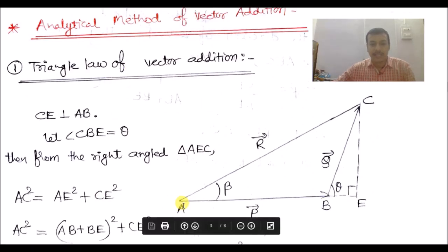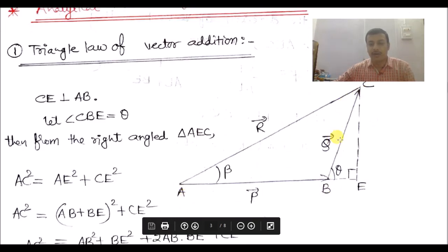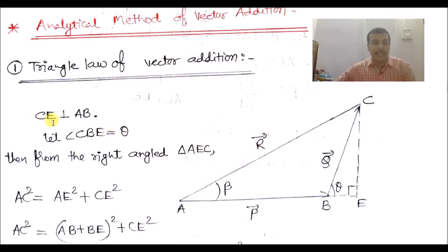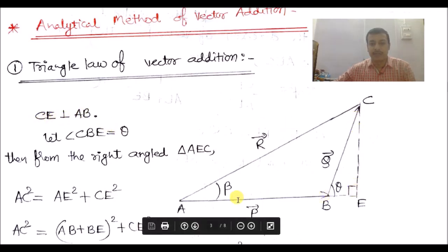We start the analytical method of vector addition with the triangle law. Suppose there is a triangle with sides AB, BC, and AC. Side AB is represented by vector P and side BC is represented by vector Q. According to the triangle law, the resultant R is represented by side AC in the opposite direction. Let CE be perpendicular to AB extended to point E, forming a right angle triangle. Vector Q makes an angle θ with AB, and resultant R makes an angle β with vector P.